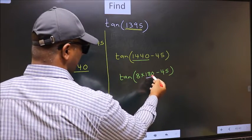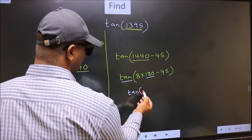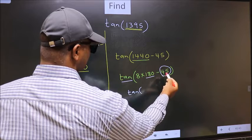Next, here we have 180. So tan is not going to change. It will remain tan. And inside, we get this angle 45.